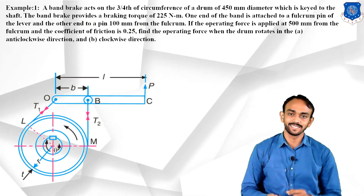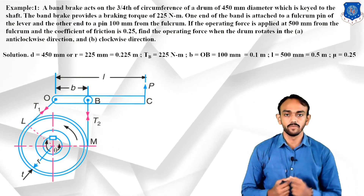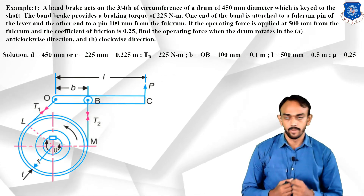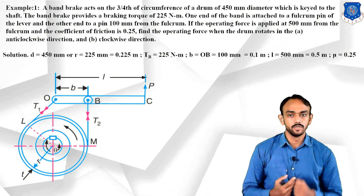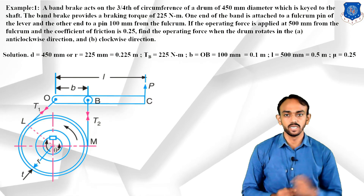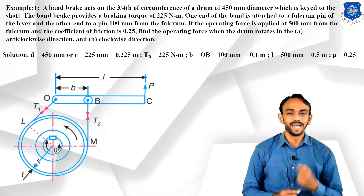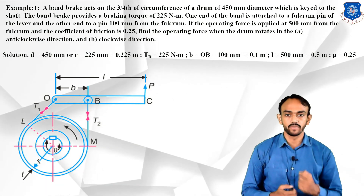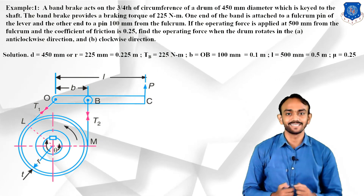Converting the given data: diameter = 450 mm, so radius r = 225 mm = 0.225 m. Braking torque = 225 N·m. b = 100 mm = 0.1 m. l = 500 mm = 0.5 m. Coefficient of friction mu = 0.25.